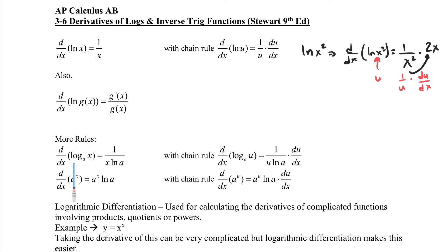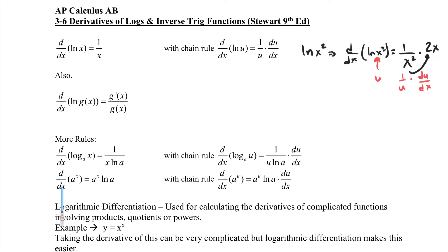The derivative of log base a of x is just 1 over x times ln(a). With the chain rule, you say 1 over u·ln(a), where ln(a) acts like a constant, times the derivative of whatever function that is. If you have the derivative of a^x — we've covered this but here it is again — it's going to be a^x times ln(a). With the chain rule, a^u becomes a^u times ln(a) times du/dx.